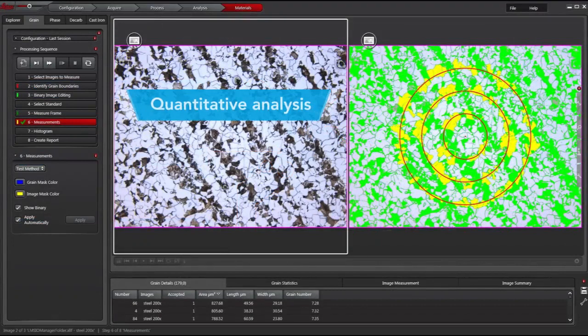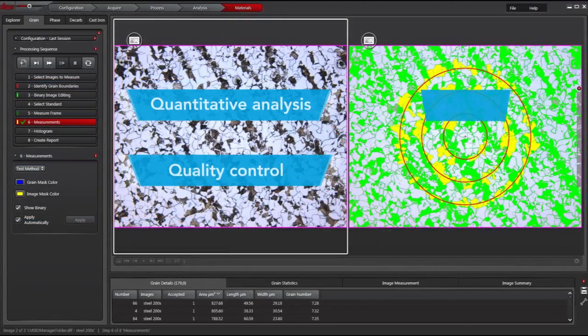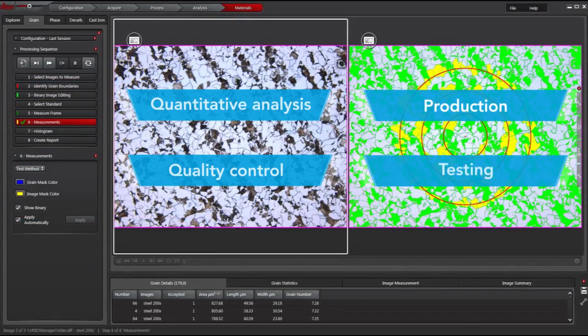Quantitative analysis is necessary for quality control, production, and testing of materials. There are various techniques that can be used to measure and quantify the microstructural features of a specimen.